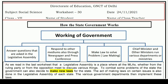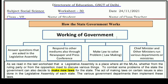Hello and welcome to Lavneesh Sarki class. This is Directorate of Education GNCT of Delhi's worksheet number 30, only for class 7 students. It is taken from the subject Social Science, Social and Political Life. We will learn and understand the chapter 'How the State Government Works' in this worksheet, and also discuss the topic 'Working of Government'.